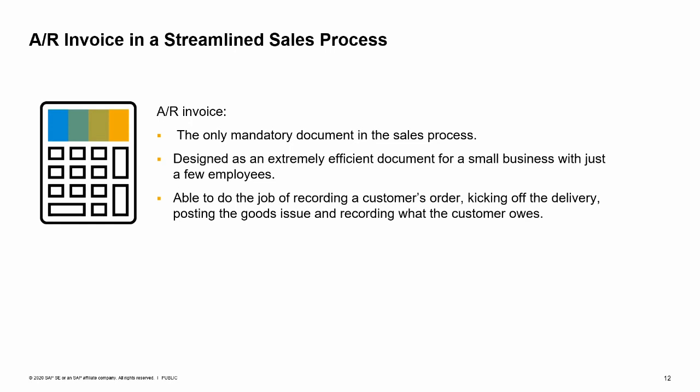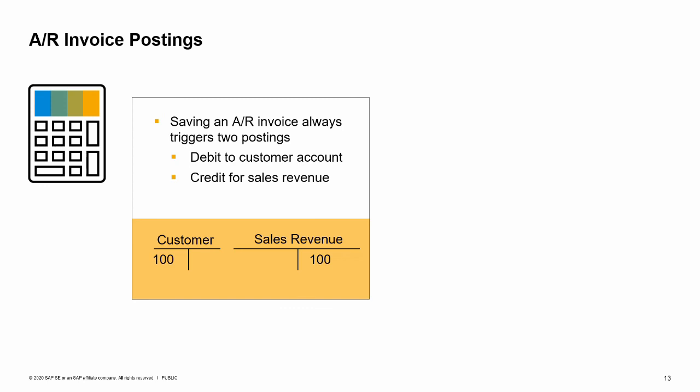The AR invoice is the only mandatory document in the sales process and is designed to be an extremely efficient document for small businesses with just a few employees. The AR invoice can do the job of recording the customer's order, kicking off the delivery, posting the goods issue, and recording what the customer owes. Saving an AR invoice always triggers two postings: a debit to the customer account to show what is owed and a credit for sales revenue. When an inventory item is sold on an AR invoice that has no preceding documents, two additional postings are made: a debit to the cost of goods sold account and a credit to the stock account.